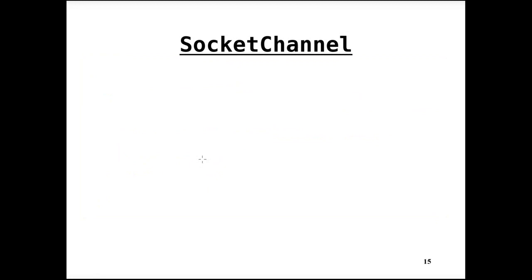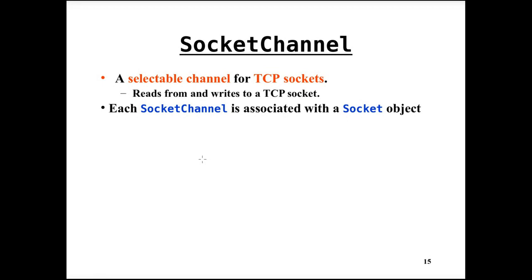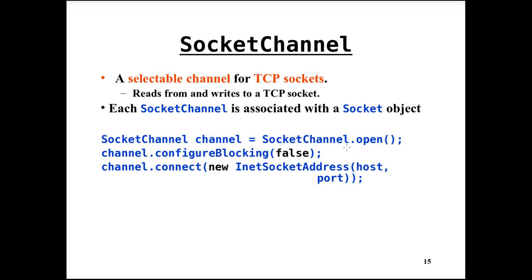A socket channel connects to a TCP socket. It is used to read and write to a TCP socket, and each socket channel is associated with one particular socket object. Here we first create the socket channel, then configure the channel to be non-blocking, then connect to the specified address.